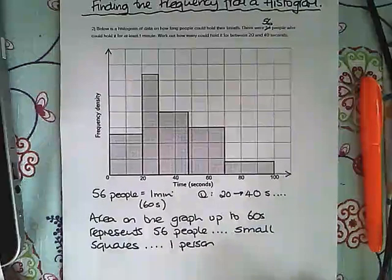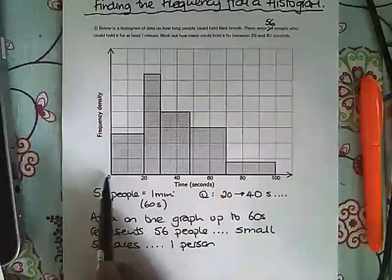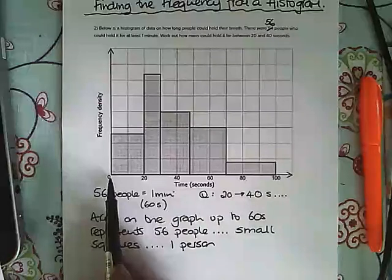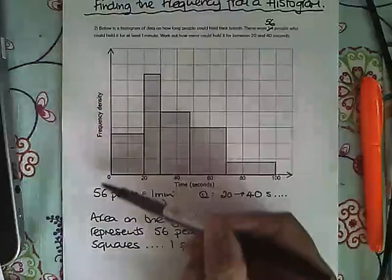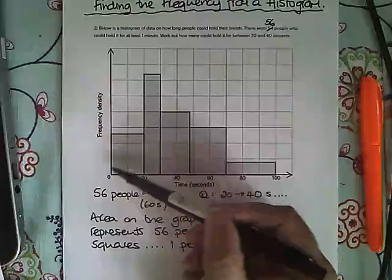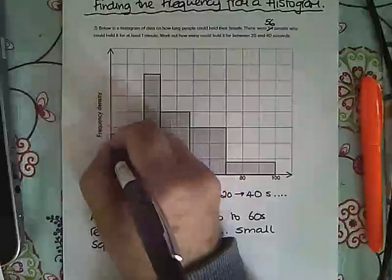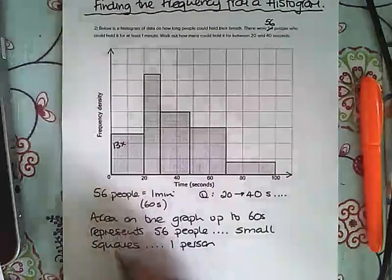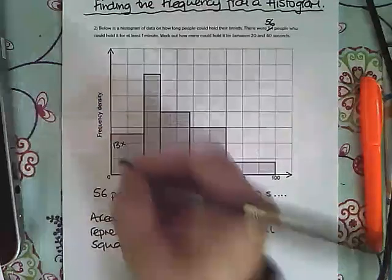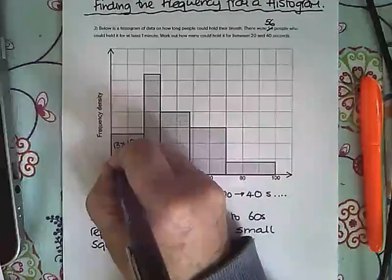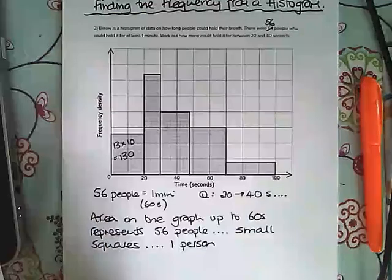To do that, I need to work out how many small squares there are first in this first block. The height of this block in terms of small squares is 13, so the area is 13 times 10, which is 130 small squares.